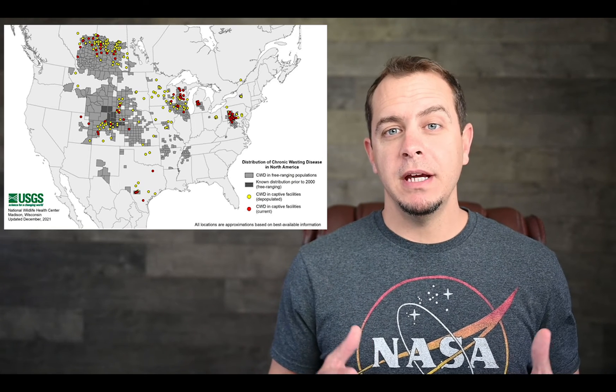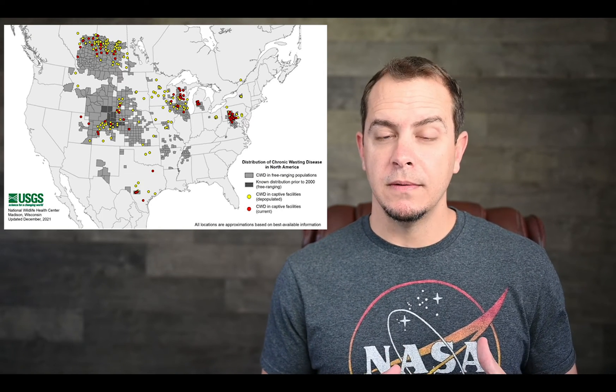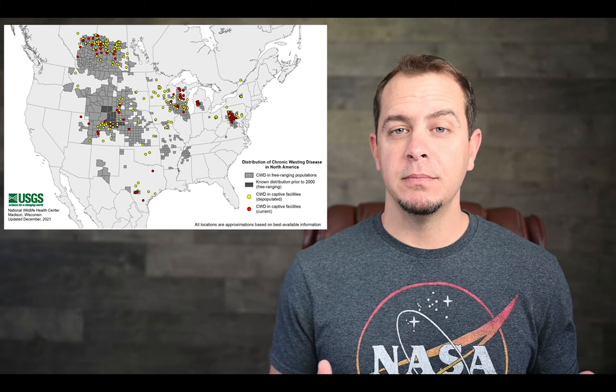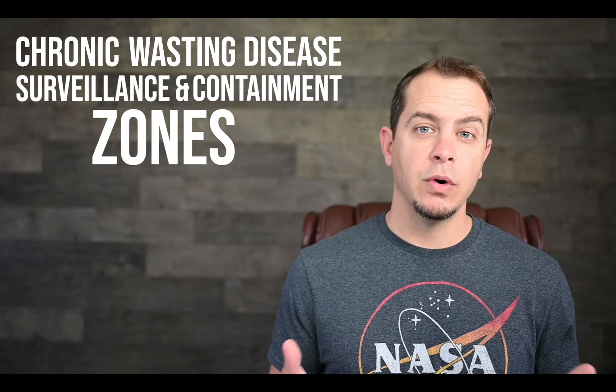Now you know what chronic wasting disease is and where it's been in Texas — so what are we doing about it? Researchers believe that Texas is early in the infection cycle, so agencies are pushing hard to combat the spread before it gets serious. Texas Parks and Wildlife is leading the charge, implementing testing and reporting sites for hunters who harvest whitetail, mule deer, or any other susceptible species. These precautions are already underway in the Trans-Pecos, the Panhandle, and the South Central zones — known as chronic wasting disease surveillance and containment zones. Hunters in these zones must bring their animal to a check station within 48 hours after harvest. Texas Parks and Wildlife has set up around 26 checkpoints for hunters to get their animals tested.